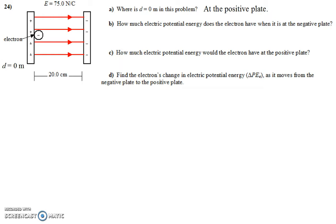How much potential energy does an electron have when it's at the negative plate? Pause the video and try it on your own. We're doing PE equals qEd. This problem is tailor-made for this equation. Put the numbers in — remember we are taking absolute value — and it should give 2.40 times 10 to the negative 18th joules. Note that the distance is given in centimeters, so you need to convert it, otherwise your power of 10 will be wrong.